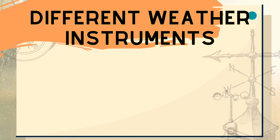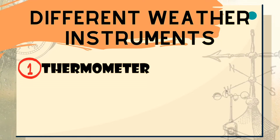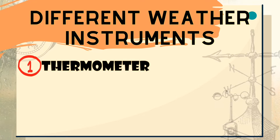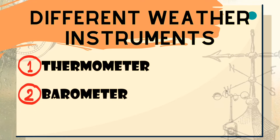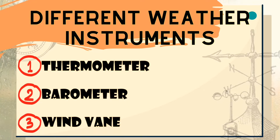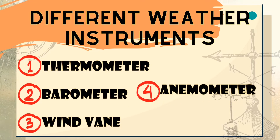What are the different weather instruments and how do we use them? We have four major weather instruments. First, we have the thermometer. Second, the barometer. Third, the wind vane. And fourth, the anemometer.